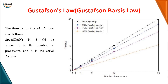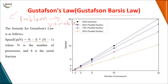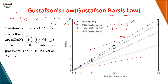Now we move on to the next law — Gustafson-Barsis's law, formulated by Gustafson. This law also deals with speedup, but here the problem size is not constant — it is variable and can be changed. The speedup formula is: N - S*(N-1), where N is the number of processes and S is the serial fraction. As you increase the number of processes, the problem size also increases, and the speedup keeps increasing. Unlike Amdahl's law where the problem size was constant and speedup saturated, here the variable problem size means speedup continues to grow.